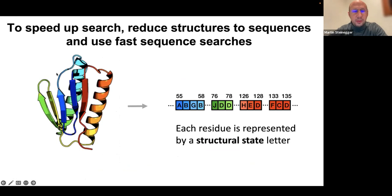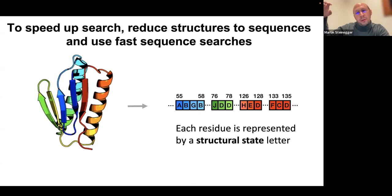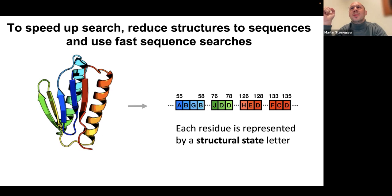The main idea of FoldSeek is to turn a structure into a sequence — but not just any sequence, one that somehow expresses structural features. A very straightforward idea would be to read off secondary structure elements and get a string representing your structure. But if you imagine searching a helix in the AlphaFold database, a helix just occurs everywhere — it is not really a good pre-filter. A lot of information is in the structured regions that, if you just use secondary structure, is just represented as H, H, H, H.